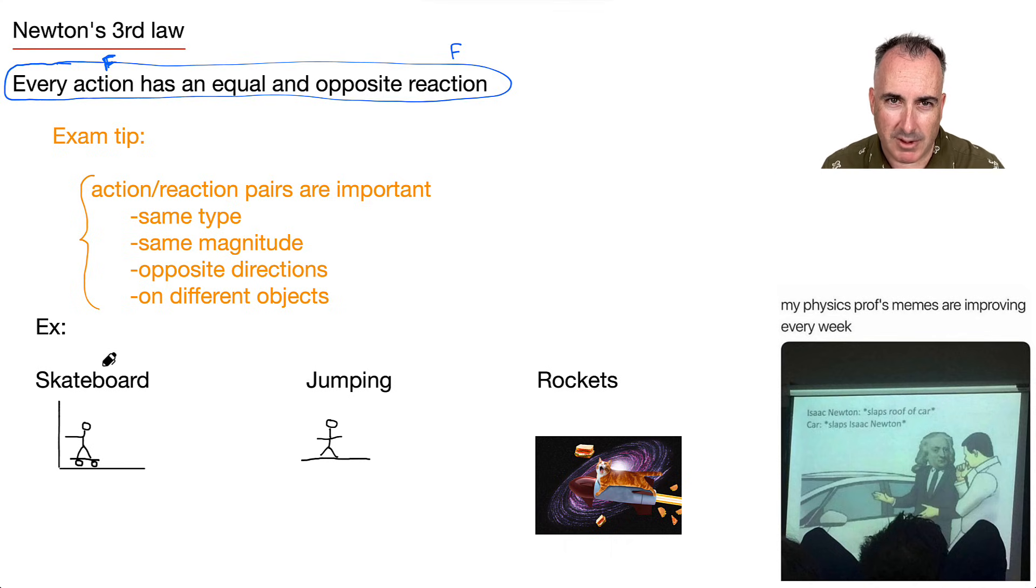So on a skateboard, for example, if I push to the left, let's just say I'm pushing, I'm standing on a skateboard like this, and I give a push to the left, I push against the wall, what happens? Technically, the wall pushes me to the right. So that's how you can end up moving to the right.